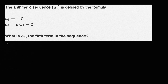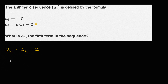Let's see what we can make of this. A sub five is going to be equal to — using the second line — a sub four minus two. We don't know what a sub four is just yet, so let's try to figure that out. A sub four is equal to — using the second line again — a sub three minus two. We still don't know what a sub three is.